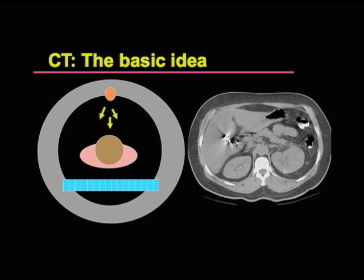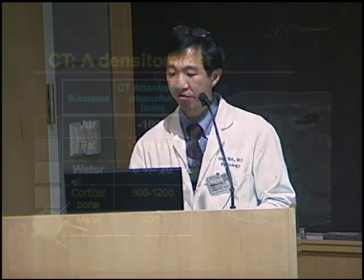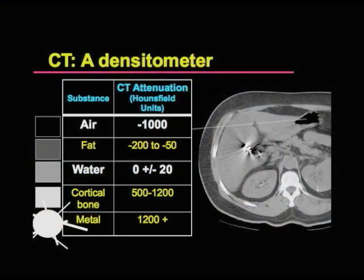And how do we look at these? X-rays will pass through objects that are less dense more easily. So air will be black — for example, here's some air within the stomach.